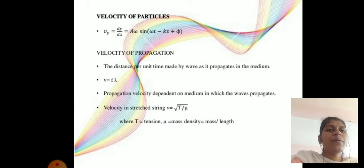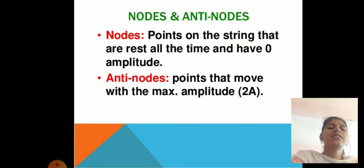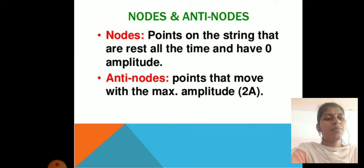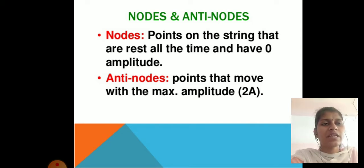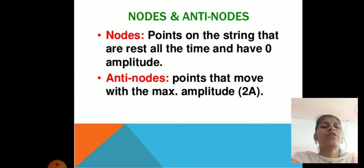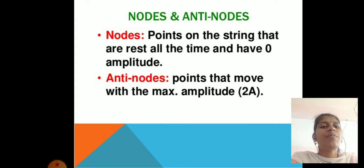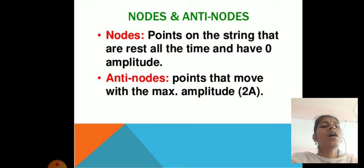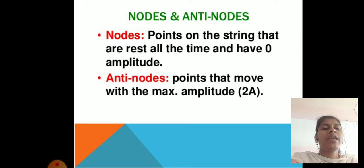Next, nodes and anti-nodes. Nodes are points on the string that are at rest at all times and have zero amplitude. Anti-nodes are points that move with the maximum amplitude, equal to 2A.